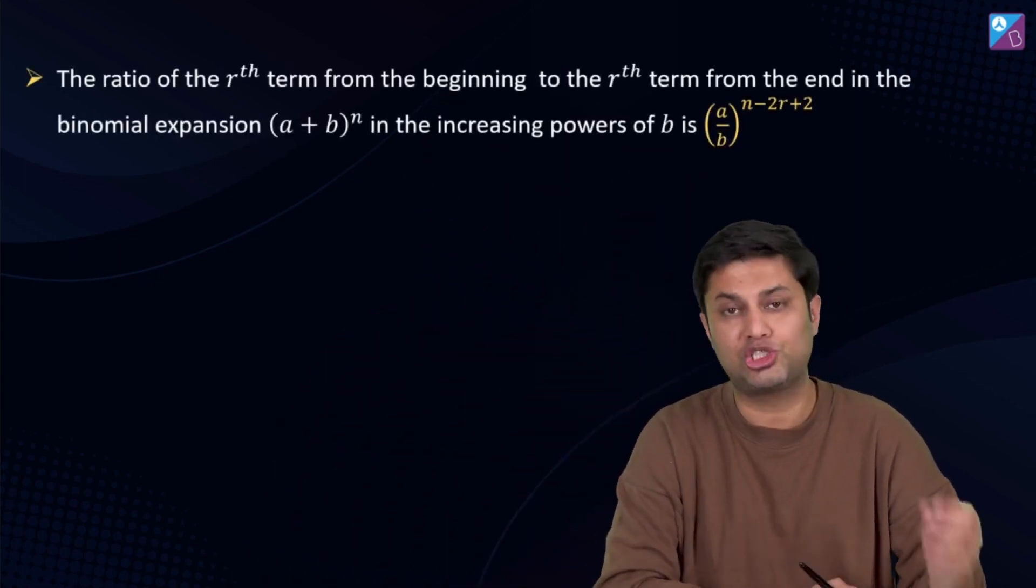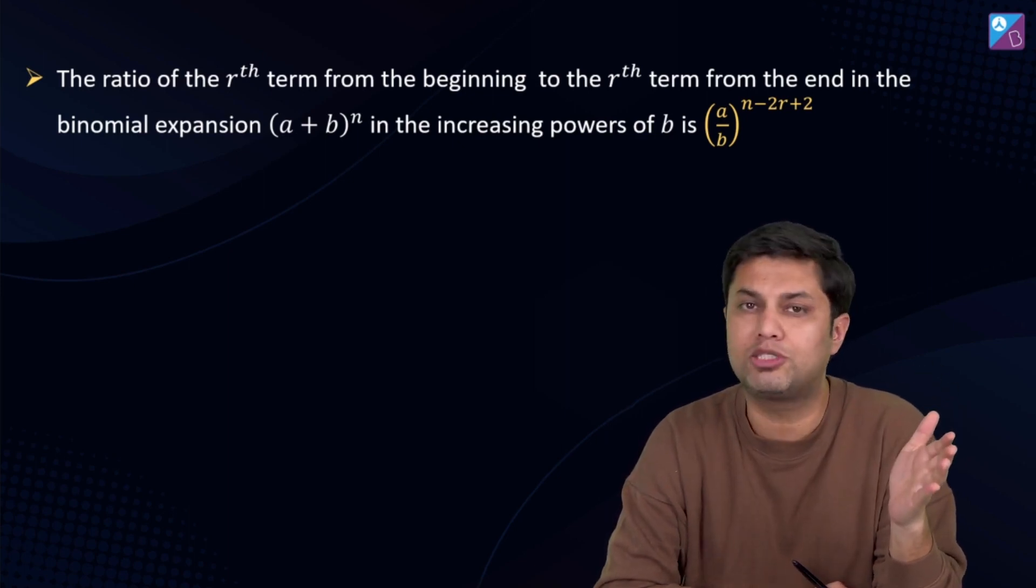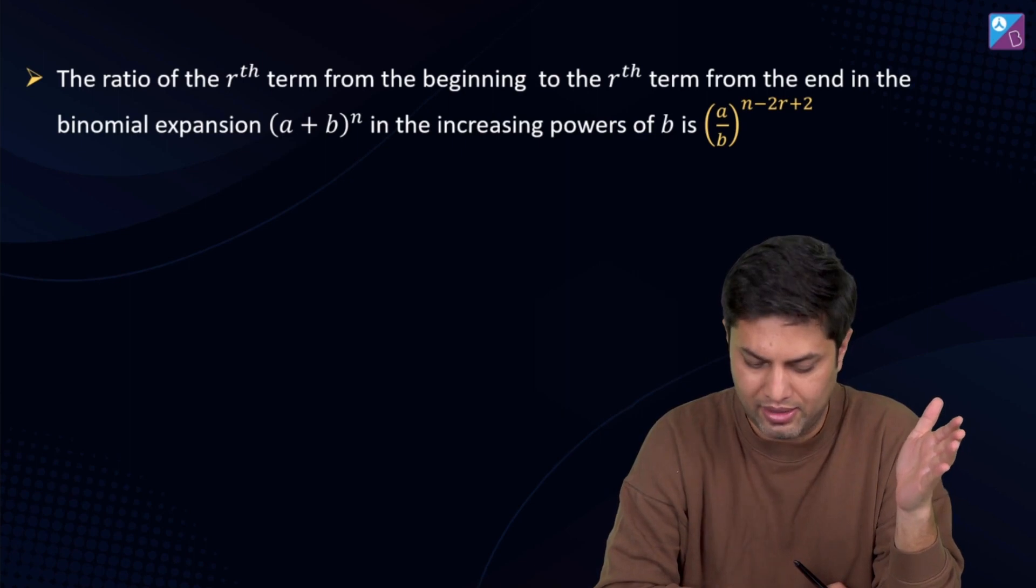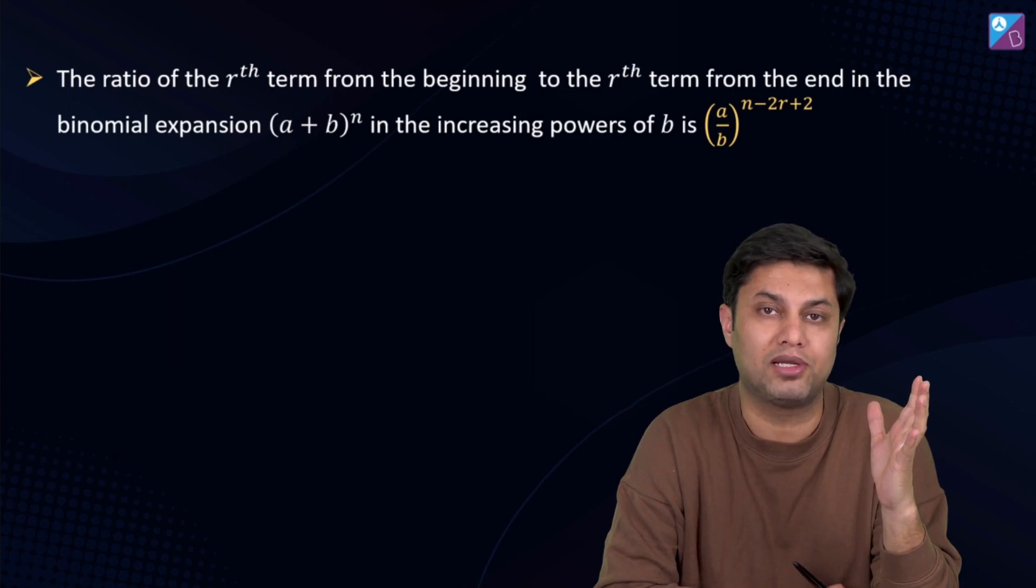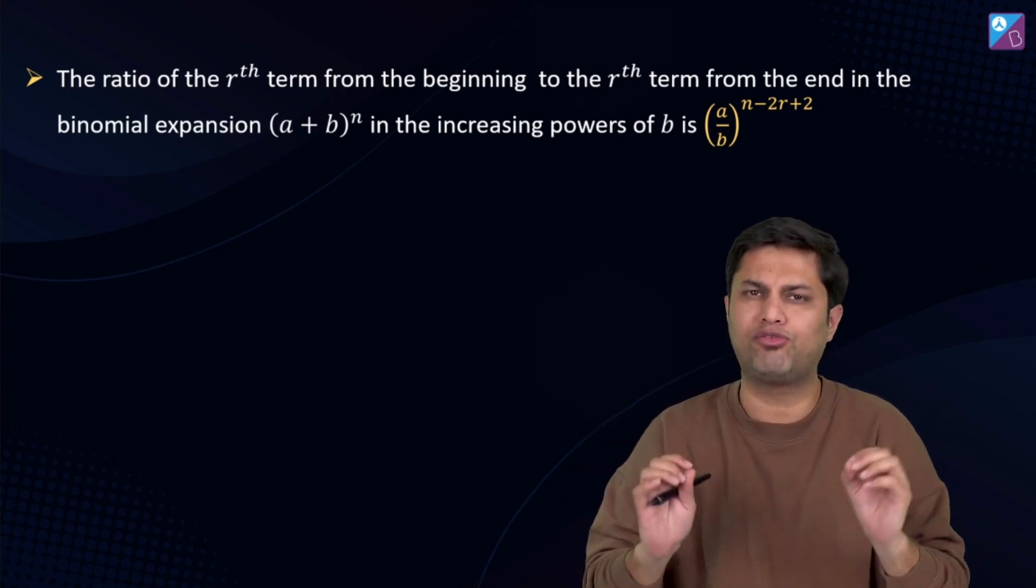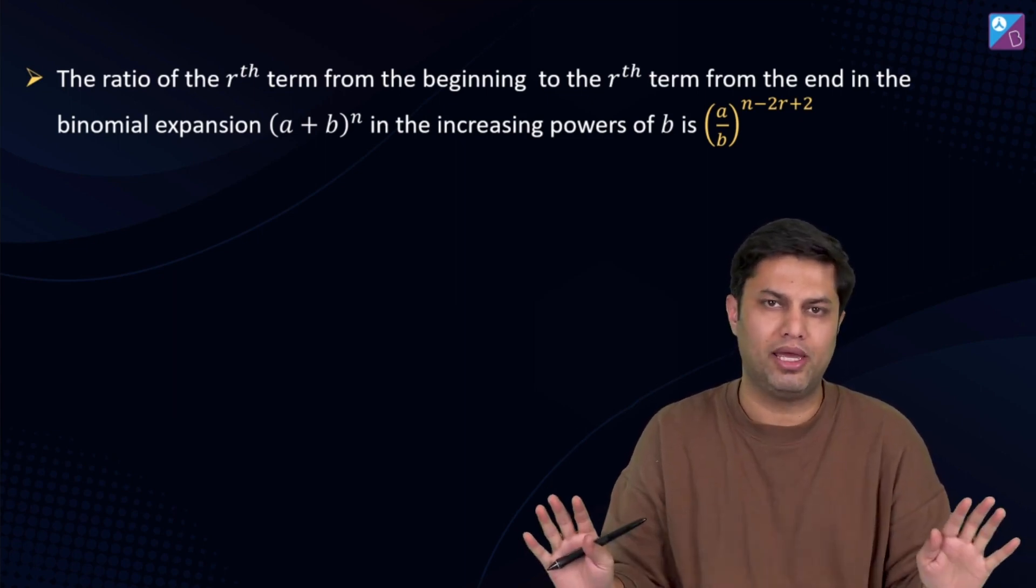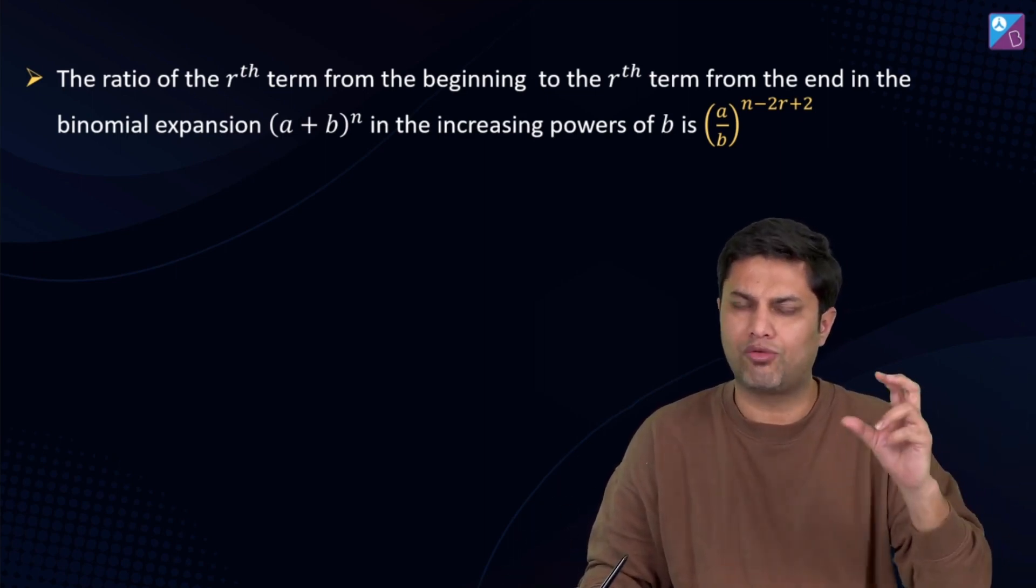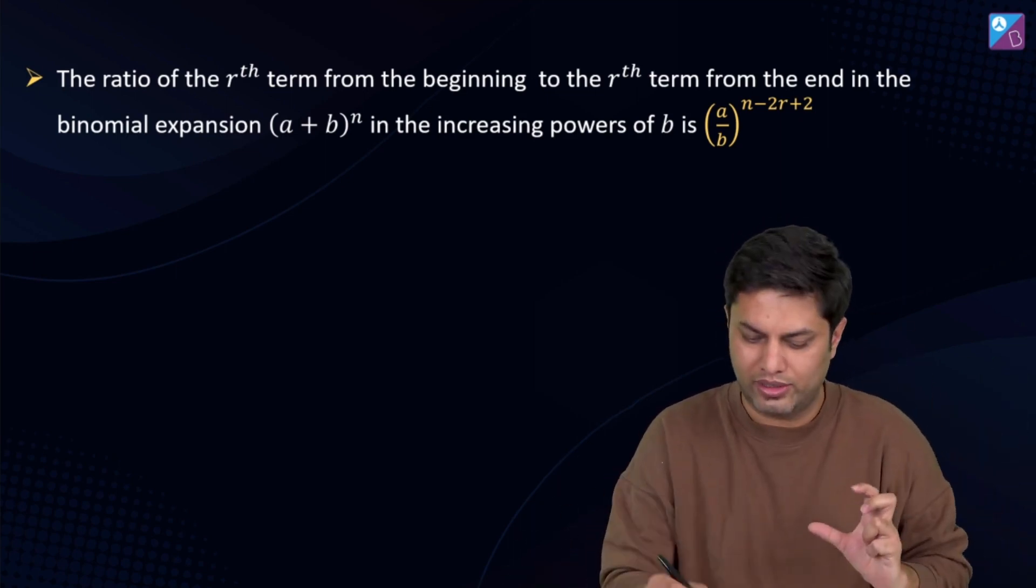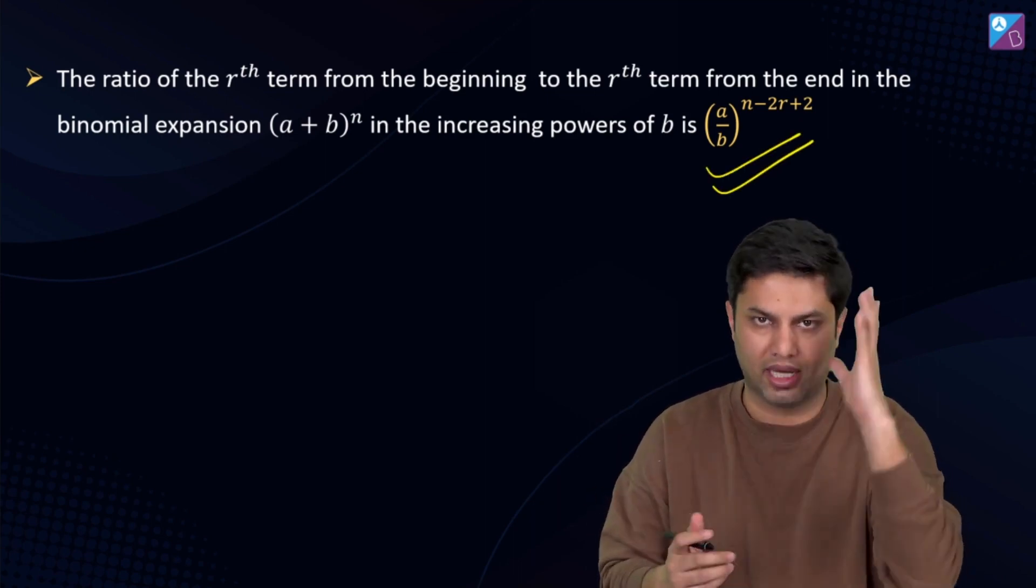Let's start without any delay. The first formula is the ratio of the rth term from the beginning to the rth term from the end in the binomial expansion (a + b)^n, in the increasing powers of b is (a/b)^(n-2r+2). This formula is very important and if you remember this direct formula, then in JEE Main there will be no problem, because such questions usually come in JEE Main, in which the rth term from the beginning or from the end of the ratio is given. So, directly the result is (a/b)^(n-2r+2). Remember this.